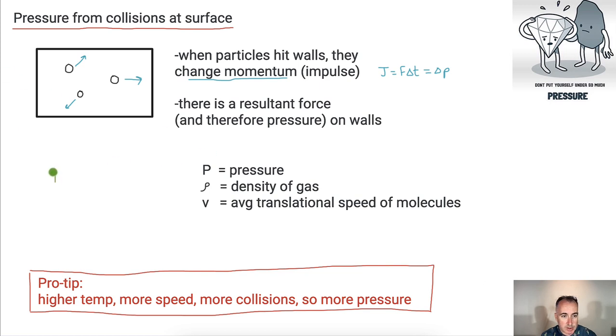So we've got an equation again. This is in your data booklet. The pressure is equal to one third times ρ times v squared. So what is this? ρ is the density of the gas, in kilograms per meters cubed. We're going to have v, which is the average translational speed of the molecule. So it's basically telling you something about how fast they're going. It's an average because some go faster and slower. And P is the pressure in pascals. So what it tells you then, this is the important thing.